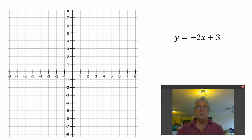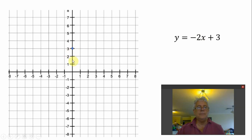y equals minus 2x plus 3. We start with the plus 3 — that's our first point. Minus 2 means we go down 2 and across 1 for the second point. Join the points and there's the line — y equals minus 2x plus 3.